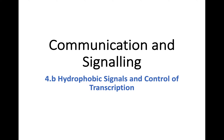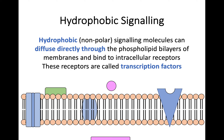This builds off 4A when we look at how molecules can cross the cell membrane and we're going to look at the effect these have. For hydrophobic molecules — hydrophobic, you may remember from earlier in this unit, these are non-polar. Hydrophobic signaling molecules are able to diffuse directly through the plasma membrane. They go straight through the phospholipid bilayers, pass right into the cell — it's an intracellular area. They do not need to bind to some form of transport protein to get across.